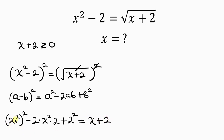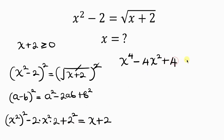From indices, powers multiply. So 2 times 2 gives 4, so we have x to the 4th, minus 2 times x squared times 2 gives 4x squared, and then plus 2 squared is 4. And this is equal to x plus 2.